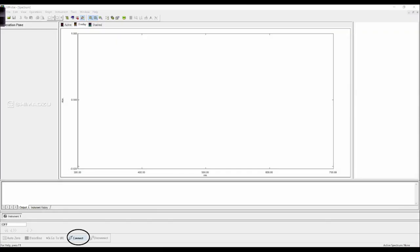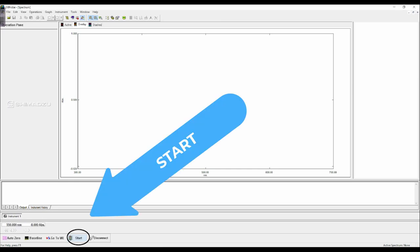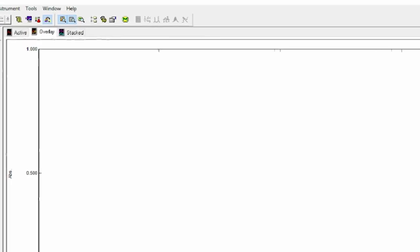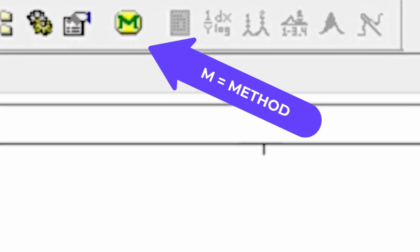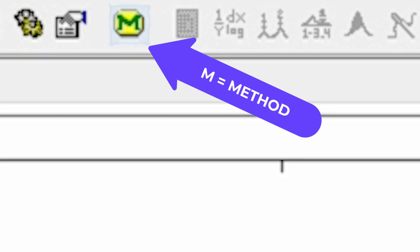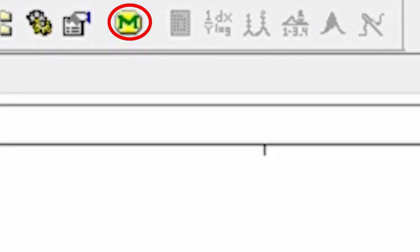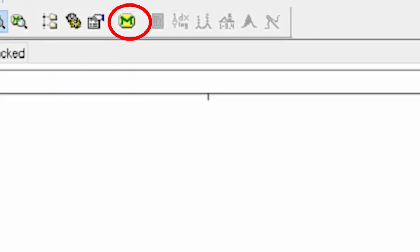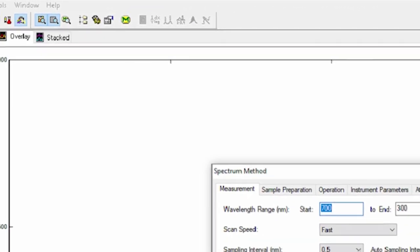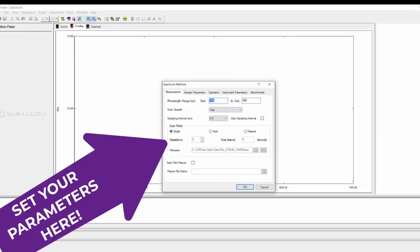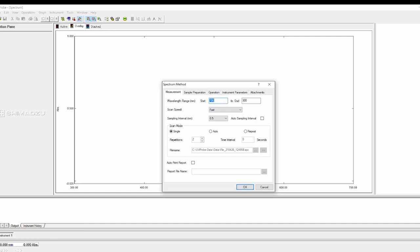So this is the interface on your screen here, of the software. First, you need to connect, and then you see the start. After that, click on this icon. It's called M, stands for method. So under the method, you will adjust what are the wavelengths that you scan your sample. And of course, you can select the speed of scan. Here, we choose very fast. You can also select the repetitions in the scan mode, the time interval, and change your file name where you want to save your files.